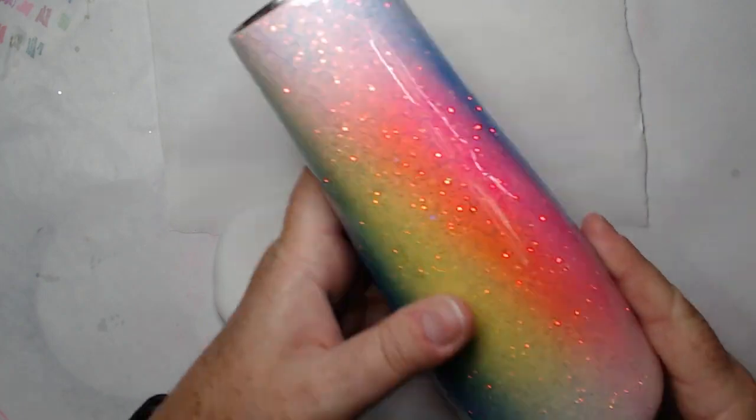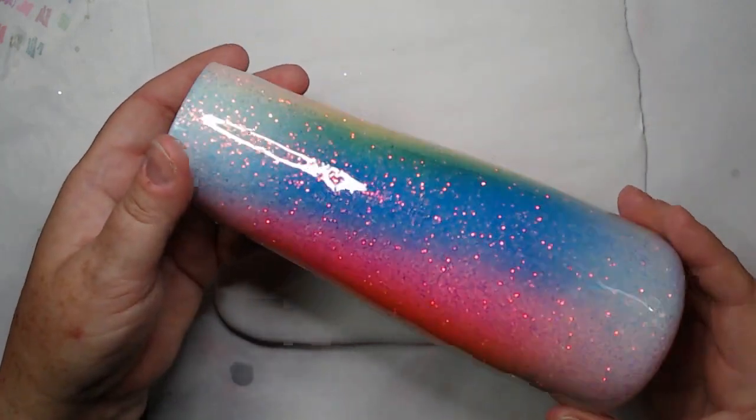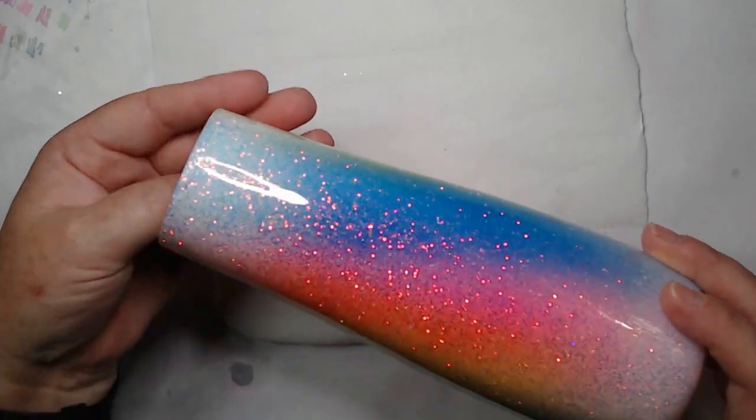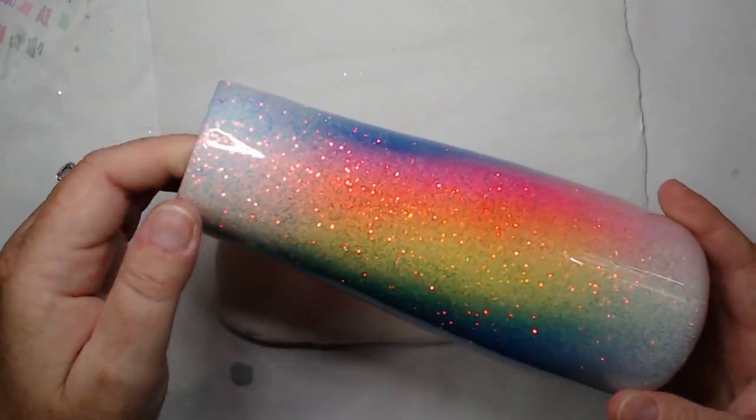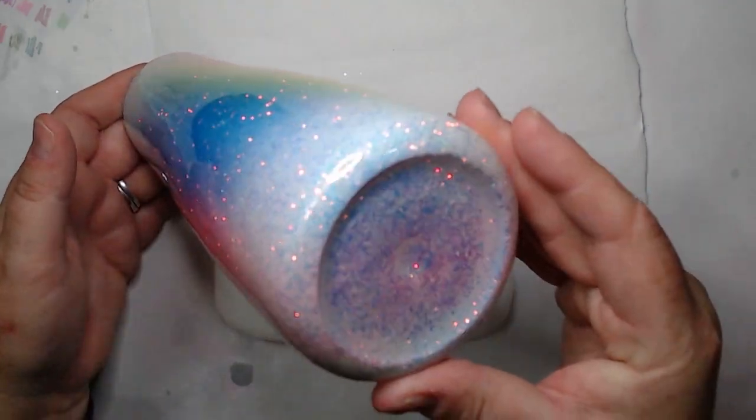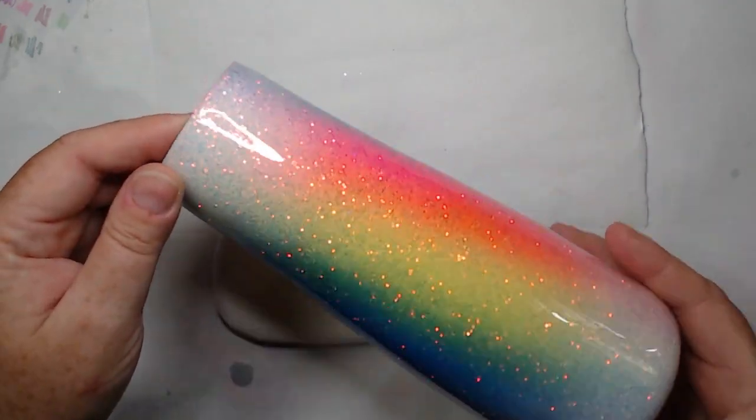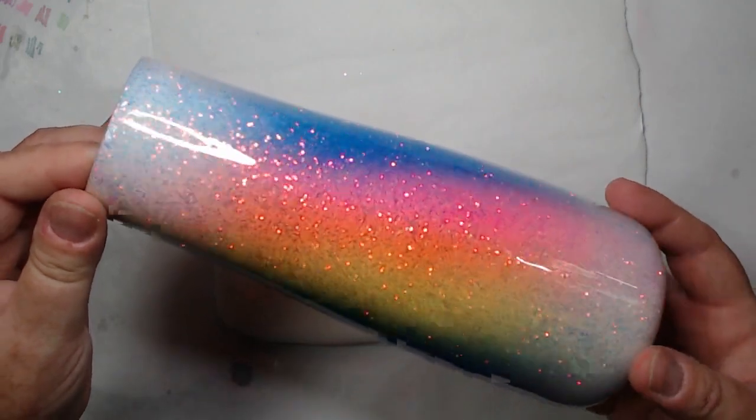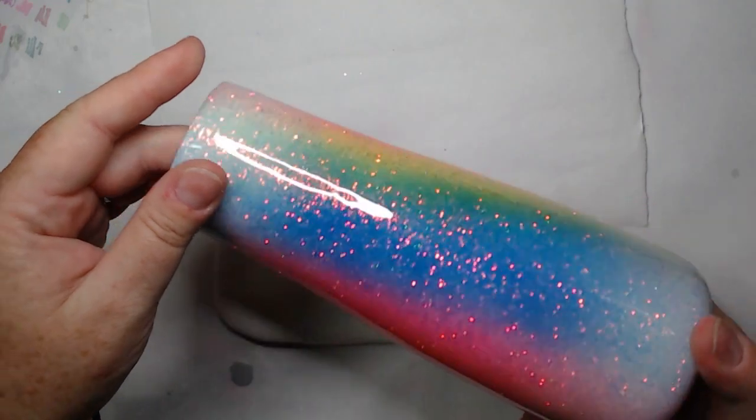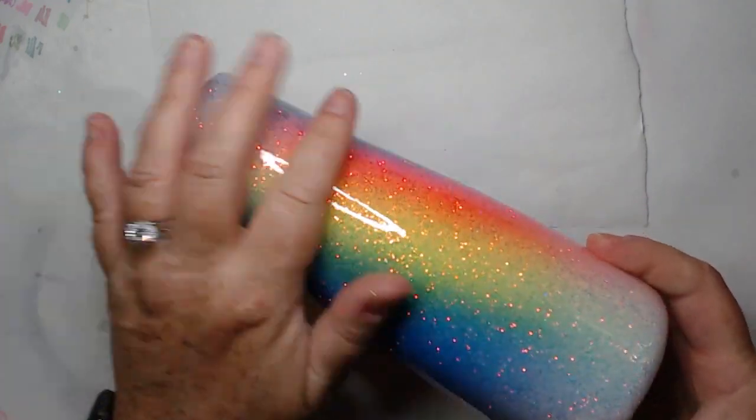So for this rock it was inspired by a tumbler that I had recently made. This is called a unicorn burst in the tumbler community and I just think they're beautiful, so I wanted to see if I could recreate it for a rock. Here are the supplies I used to make this project.